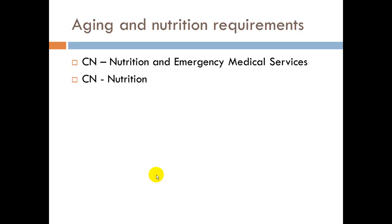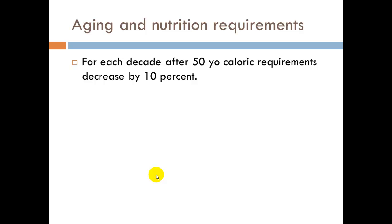Aging and nutrition. For each decade after 50 years old, caloric requirements decrease by about 10%. So if you're 60 years old versus when you were 40, you have about a 10 to 20% caloric intake decrease. If you're still keeping the same caloric intake, you're liable to store those calories as lipids or fats.